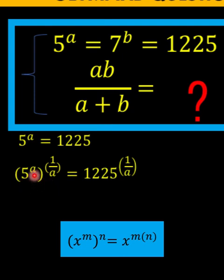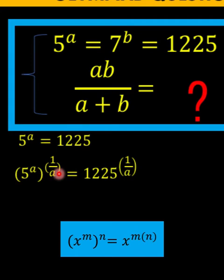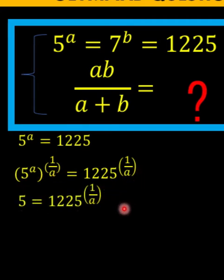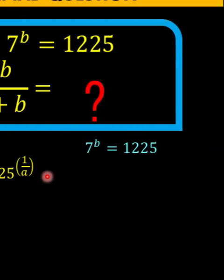We simply multiply the exponent a and the exponent 1 over a. Since a times 1 over a equals 1, our left side becomes 5, and we just copy the right side: 1225 raised to 1 over a.